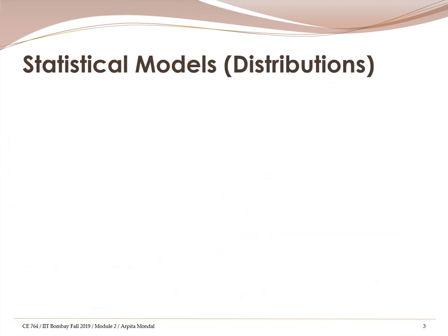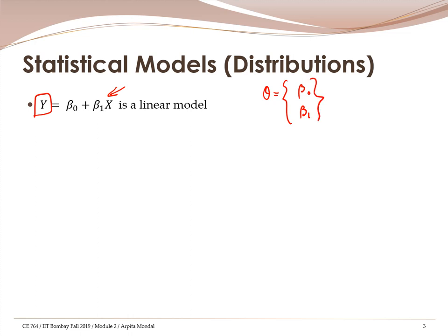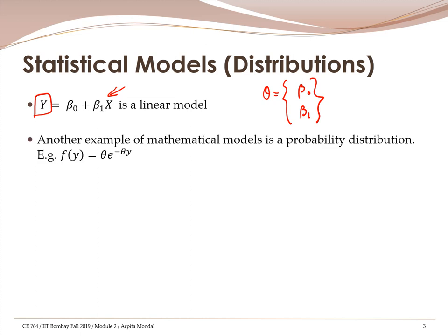Let's now talk about statistical models. One of the simplest models is a linear model, where the random variable — the dependent variable y — is a function of the independent variable x, and the relationship between them is linear. The parameter set theta is defined by two parameters: beta_0 and beta_1, representing the intercept and the slope of the relationship respectively. This is one type of model; however, the most common types of models used in statistics are probability distributions.